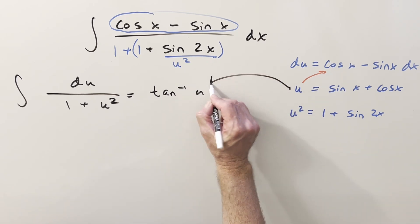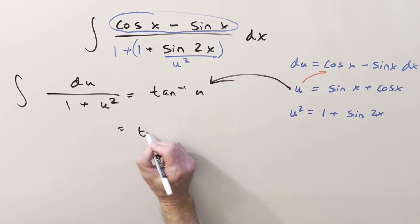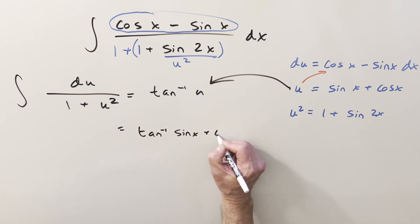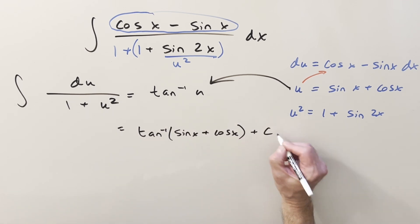Go ahead, back substitute on it. And so for my final solution, we just have arctan, sine x, plus cos x, add a plus c, and that's it.